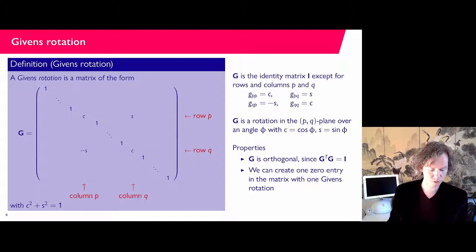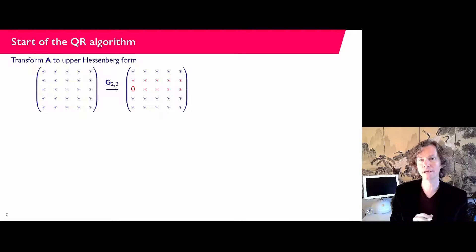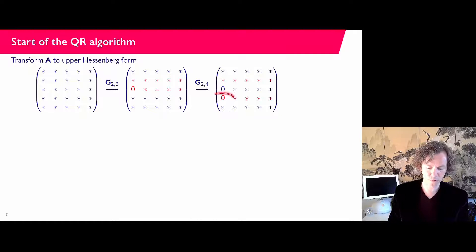Starting with a 5×5 matrix where all entries are generally non-zero, we use a rotation in the 2-3 plane to create a zero in the first column. Since the length of the first column cannot change, we adjust the entry on the lower diagonal. We then continue creating zeros in the fourth and fifth rows of the first column, then in the fourth and fifth positions of the second column, and finally in the 4-5 plane for the third column, arriving at upper Hessenberg form.